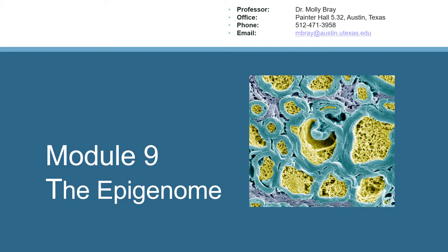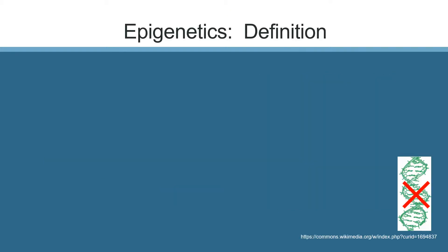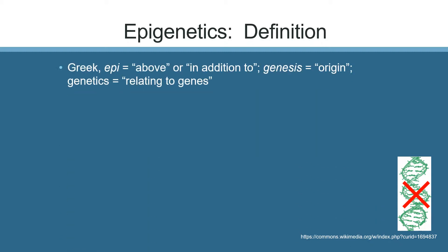Module 9: the epigenome. The term epigenetics has been defined in variable ways. The components of the word are derived from the Greek term 'epi,' which means 'above' or 'in addition to,' and 'genesis,' which means 'origin' — or in the common biological context, 'genetics' means relating to genes.